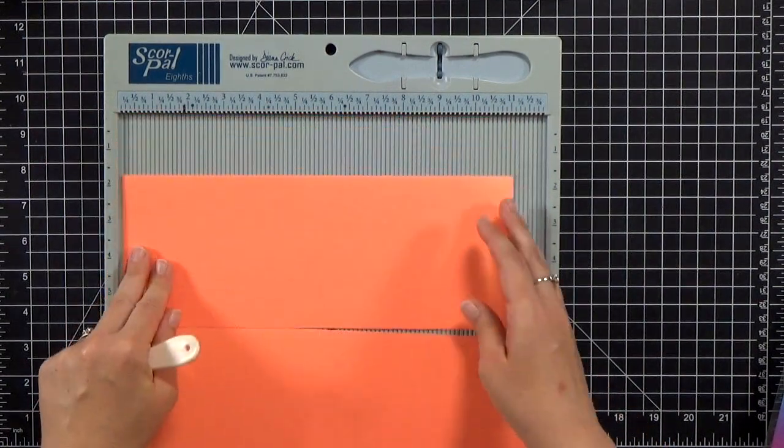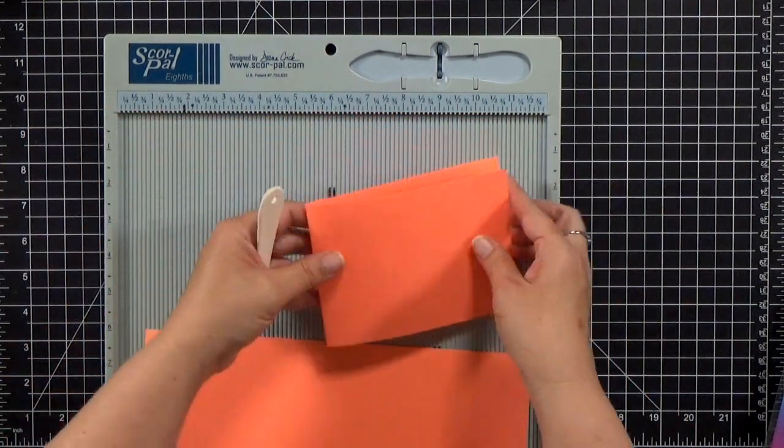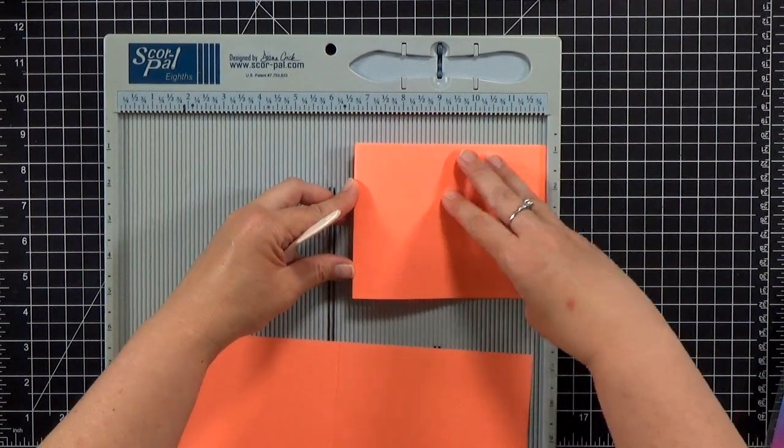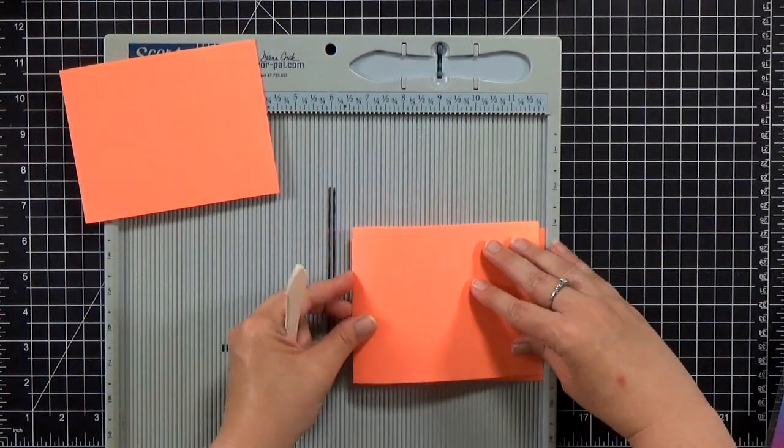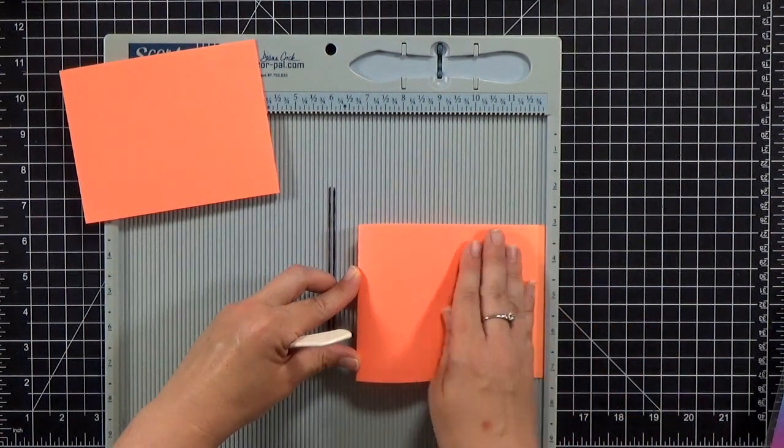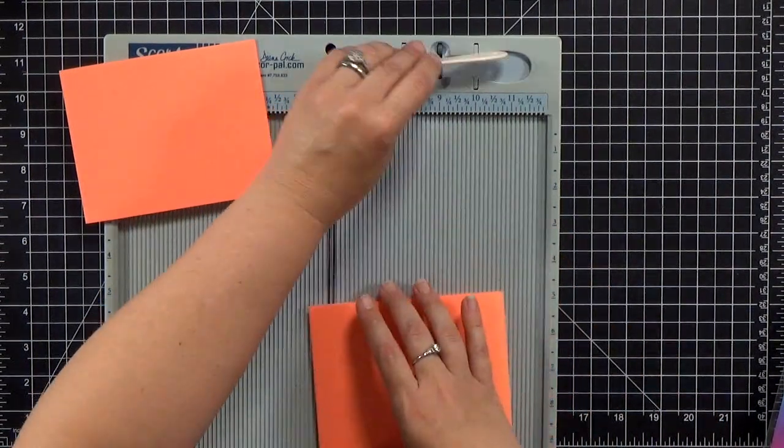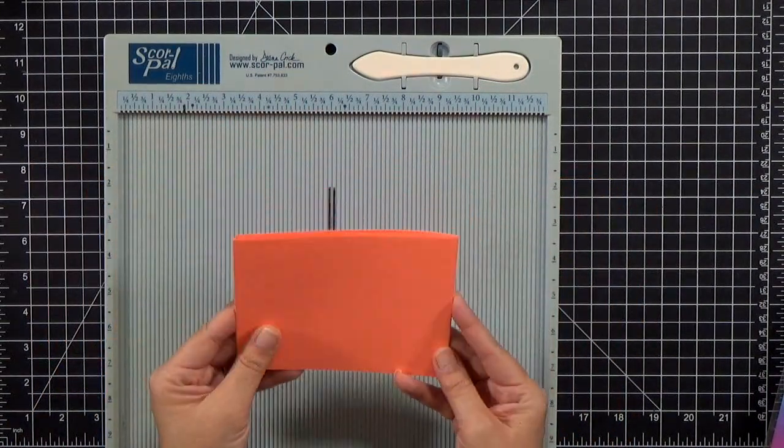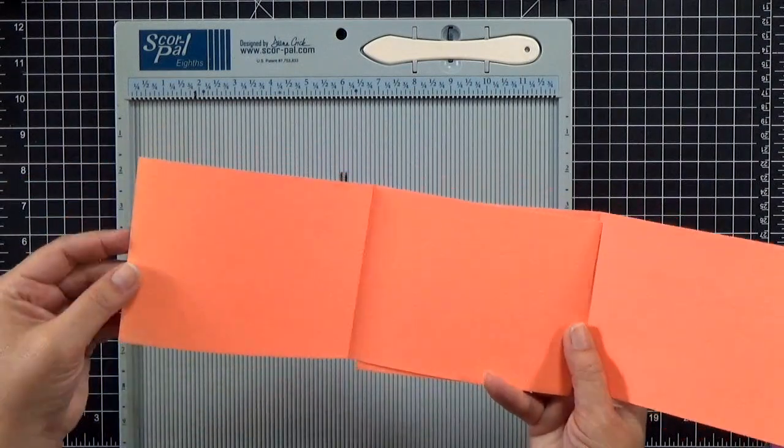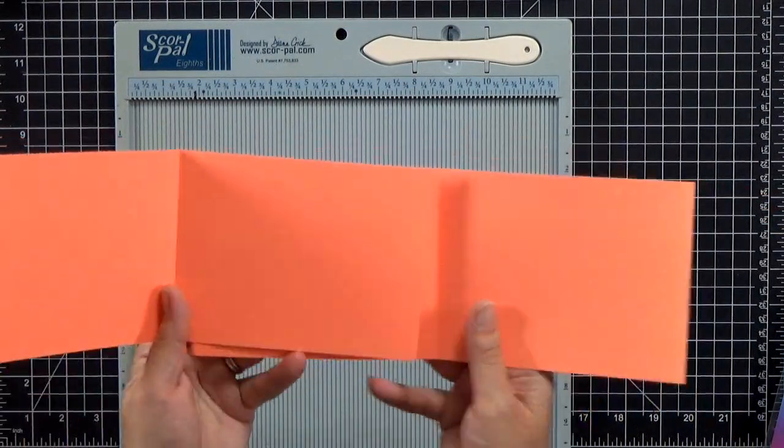And then I'm going to bring in my score pal. I'm going to fold them both at the halfway point. So five and a half inches there and then I'll just reinforce those folds. With that bone folder I like to make sure that I've got a nice squared line there. And you can see when you nestle the two together you end up with basically a tri-fold card.